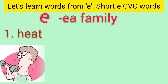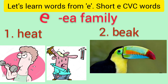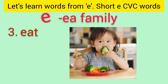Next family is the EA family. Number one is H-EA-T: heat. Number two is B-EA-K: beak. Look at this colorful beak of a bird. Number three is E-A-T: eat. Look at how this little girl is eating broccoli — a healthy green vegetable. We should all learn to eat healthy green vegetables.